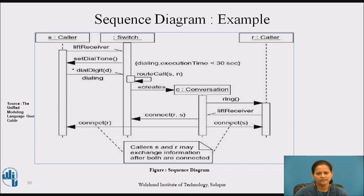Although not shown in this interaction, C would have the additional responsibility of being a party in the switch's billing mechanism which would be expressed in another interaction diagram. The conversation object C rings the caller R, who asynchronously sends the message lift receiver.